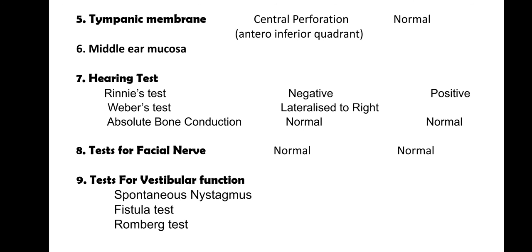Write the Rinne's test, Weber's test, and the absolute bone conduction test — noting whether it is normal or abnormal. The Weber's test is either central or lateralized to one side. The Rinne's test may be positive or negative. The teacher may ask about false negative Rinne, which occurs in cases of severe sensorineural deafness.